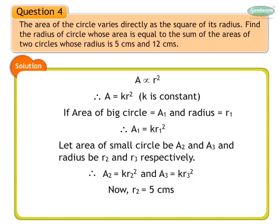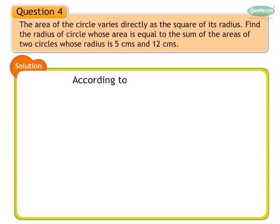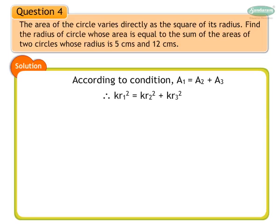Now, r2 is equal to 5 cm and r3 is equal to 12 cm. According to the condition, the area of the large circle is equal to the sum of the areas of the two small circles. Hence, a1 is equal to a2 plus a3. So, kr1 square is equal to kr2 square plus kr3 square. We have an equation which relates the areas of the circles. Since k is a common factor, it cancels out. We therefore get r1 square is equal to r2 square plus r3 square.